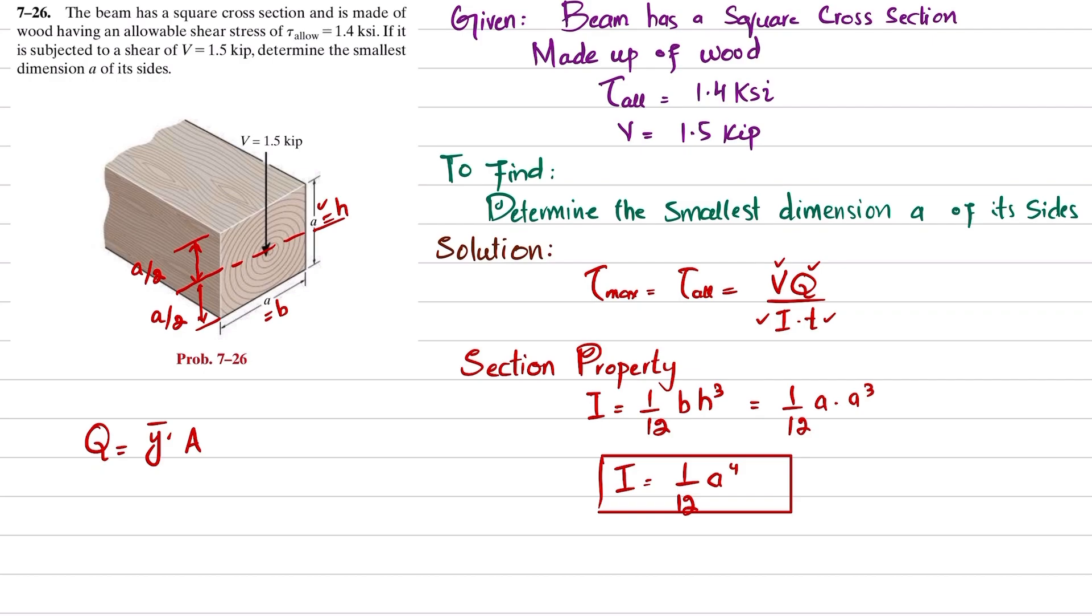For Q, we must take the upper half portion, which is this one. You can see this area is a·(a/2), and its ȳ is the distance from neutral axis to the centroid of this, which will be (a/2)/2, equal to a/4. So ȳ is a/4, multiplied by the area which is a²/2. This will give you a³/8.